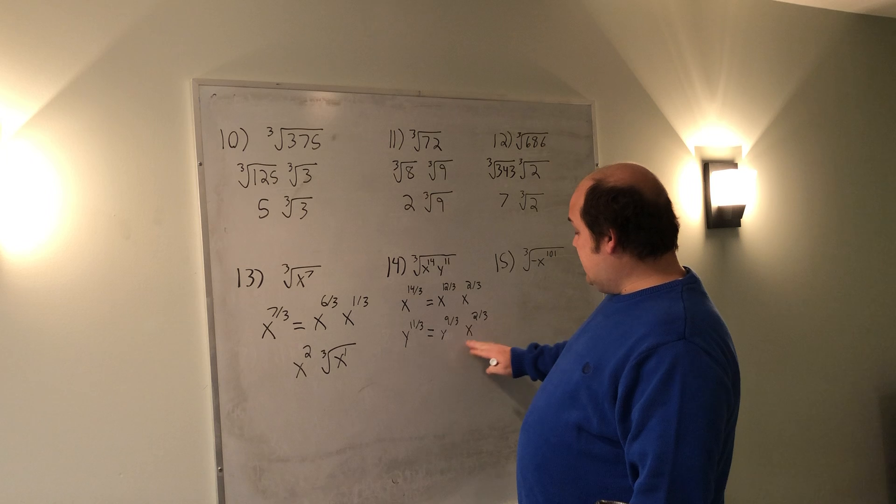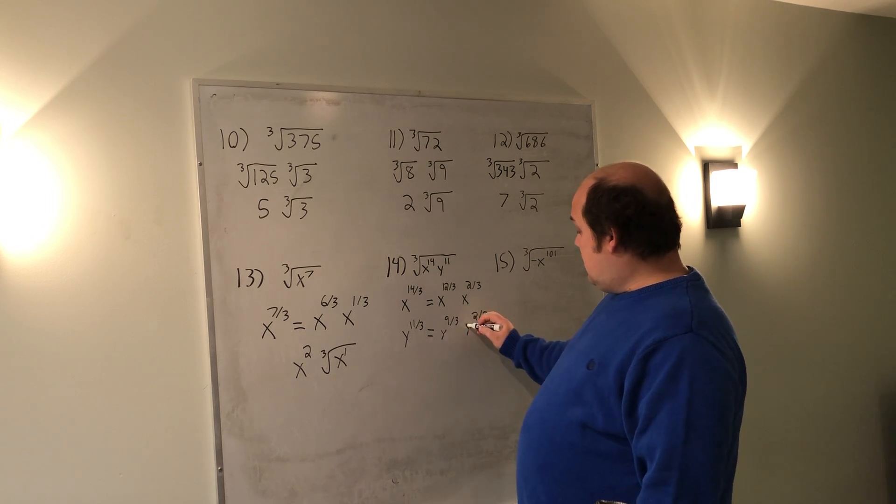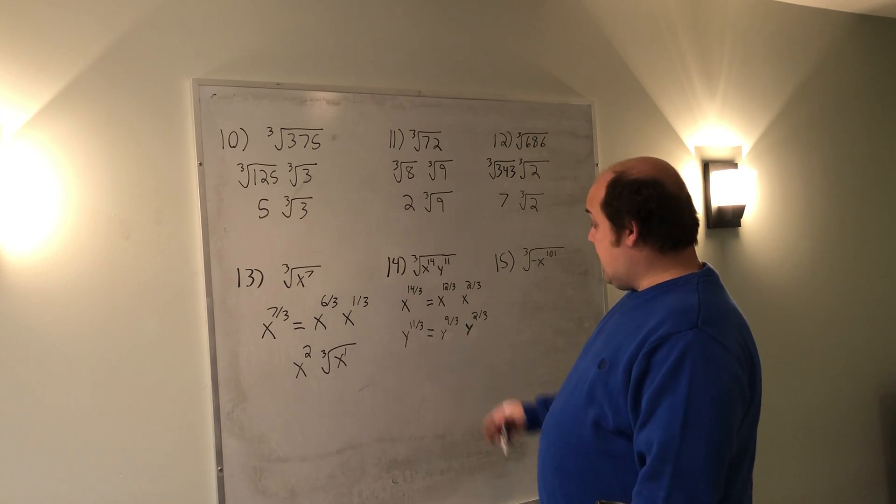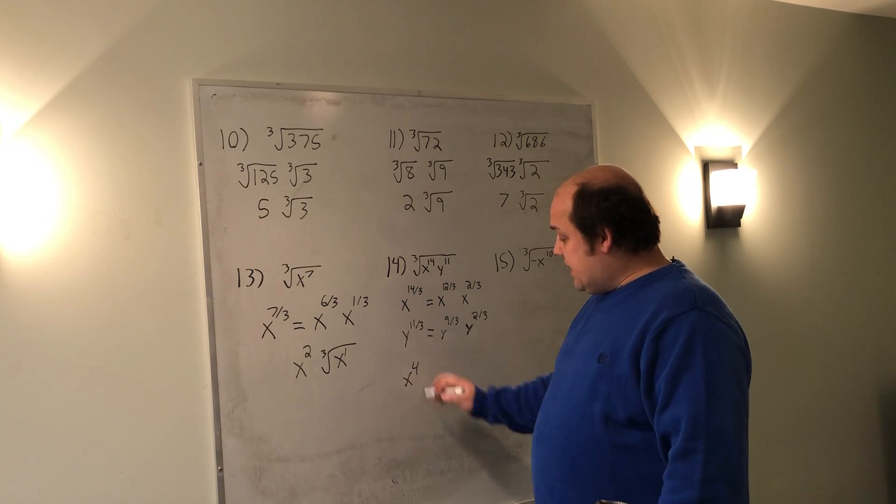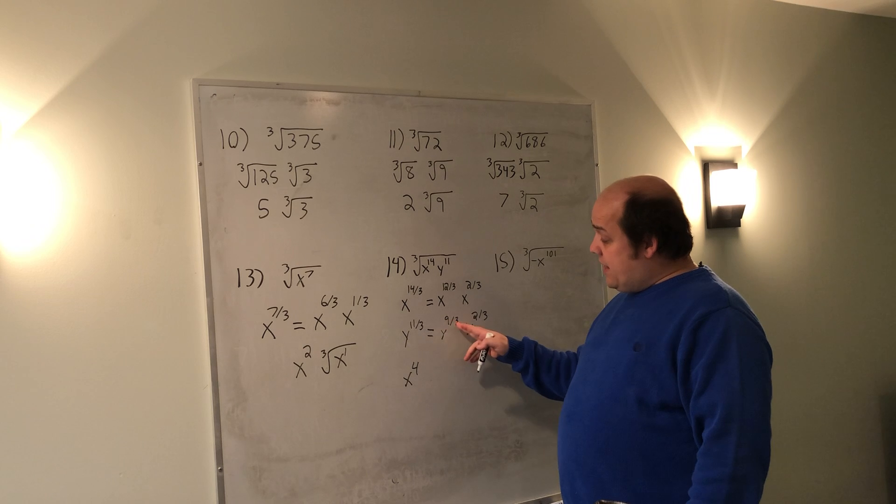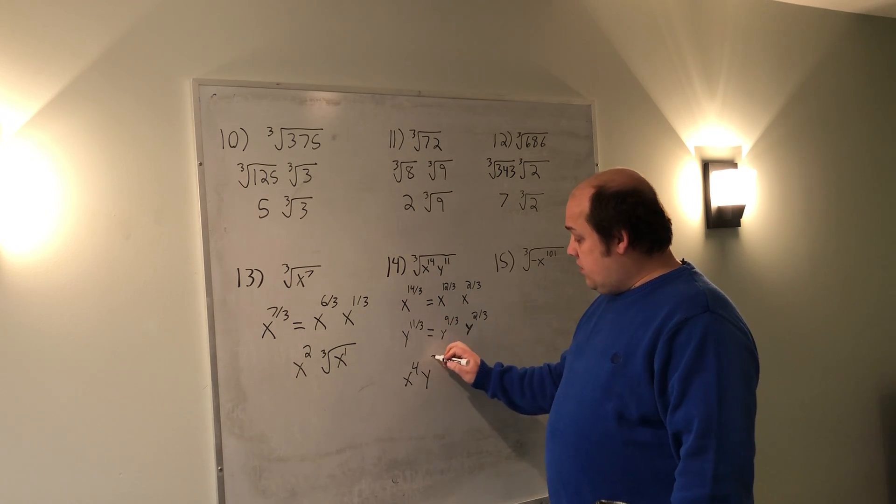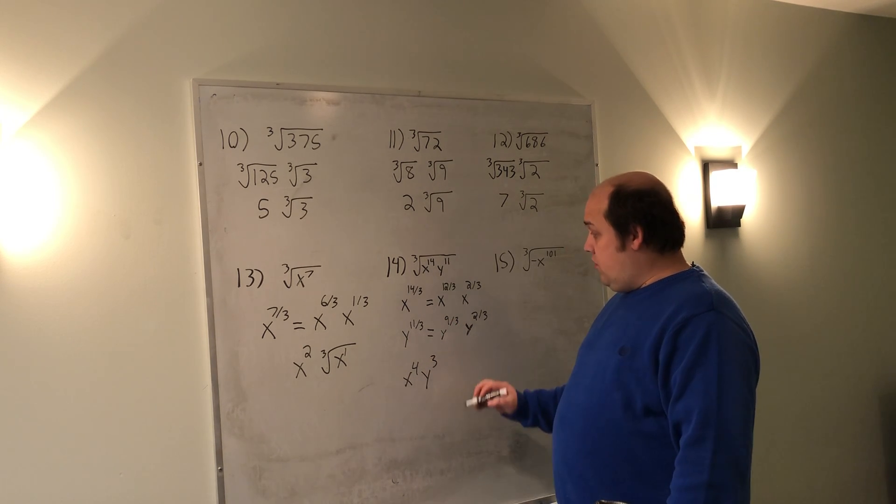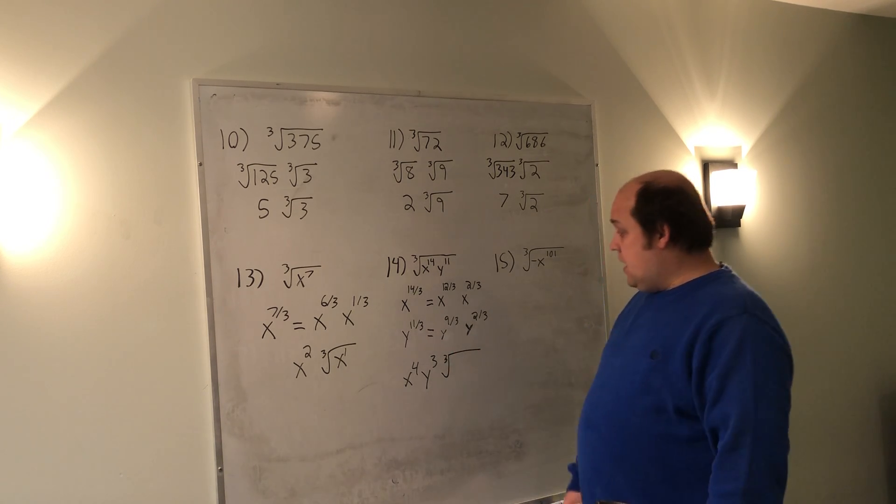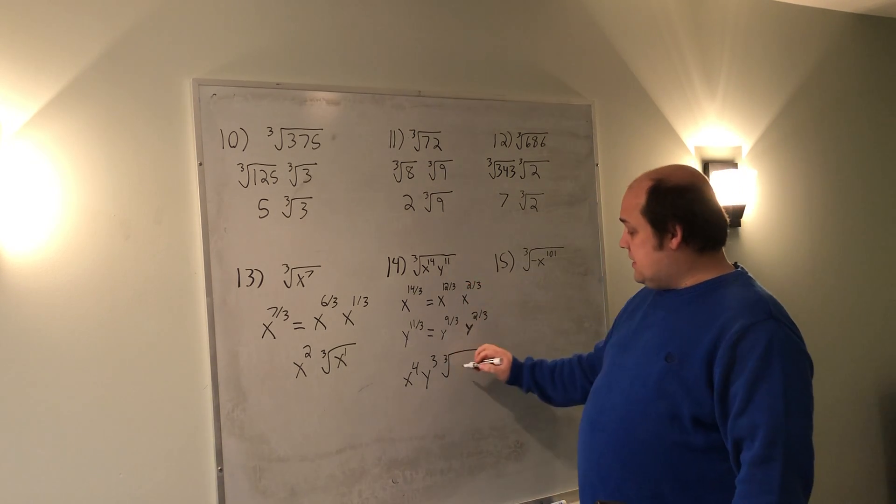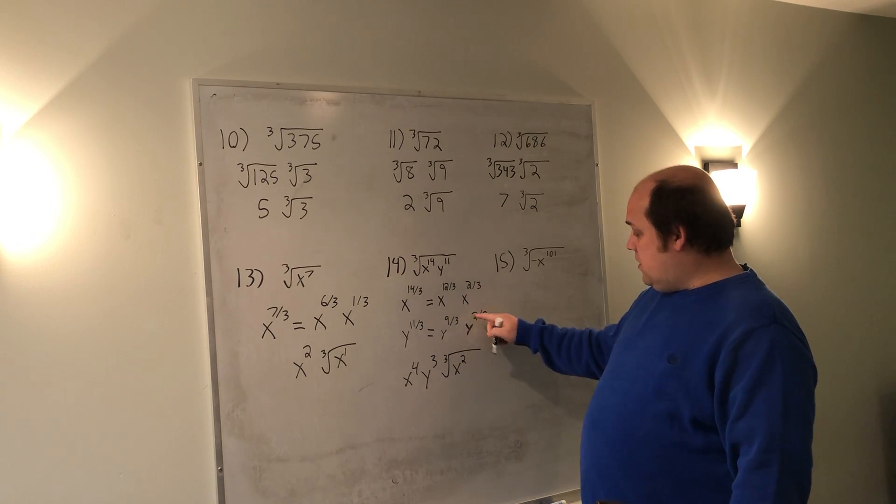Sorry, these should have been y's, not x's. Now when I look at these things together, this x to the 12 divided by 3 becomes x to the 4th that came out of the root. This y to the 9 divided by 3 becomes y to the 3rd that came out of the root. I keep the same root number, a third root, and underneath it I put x to the 2nd, y to the 2nd.